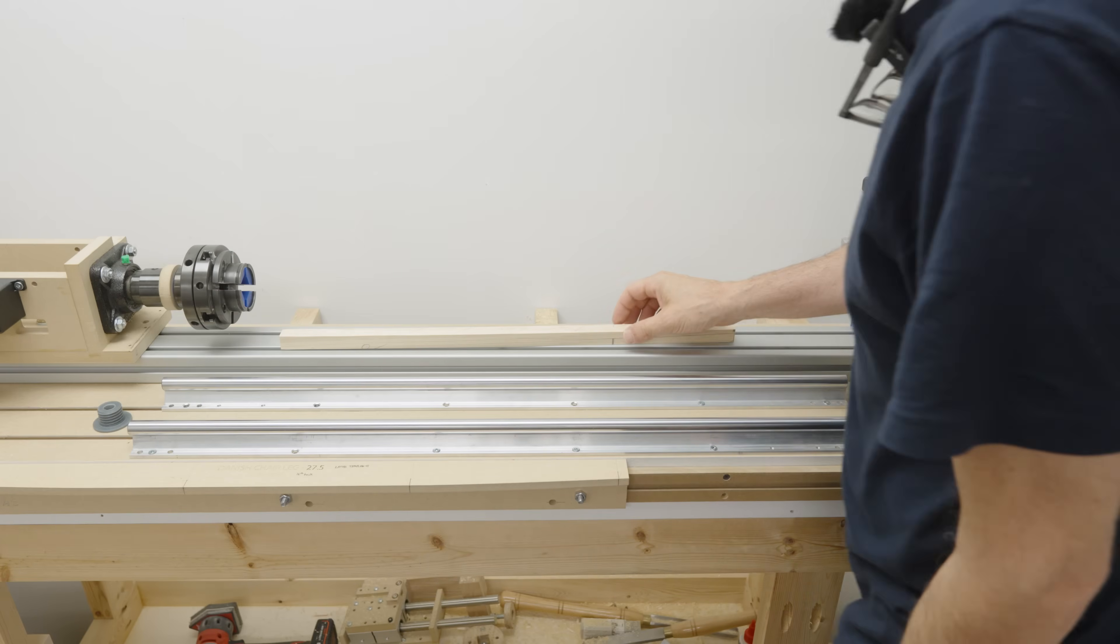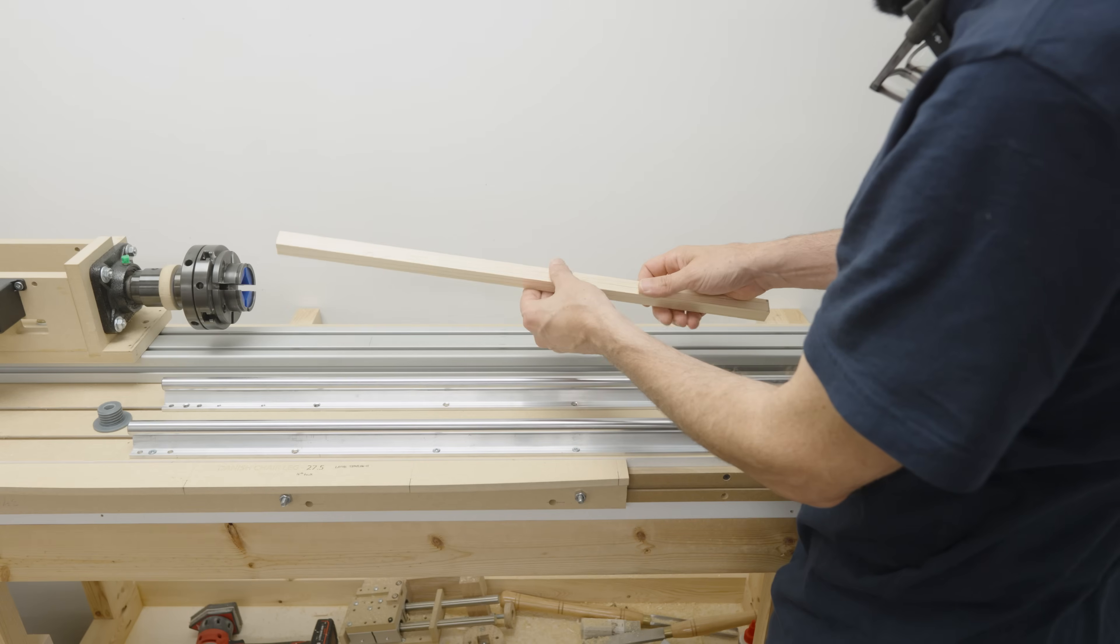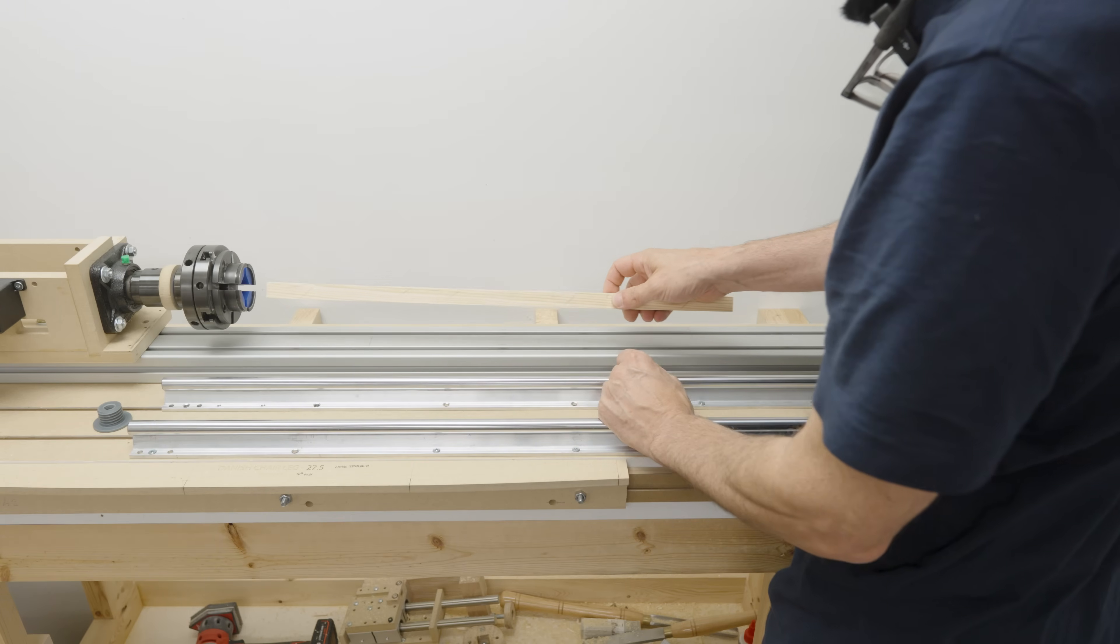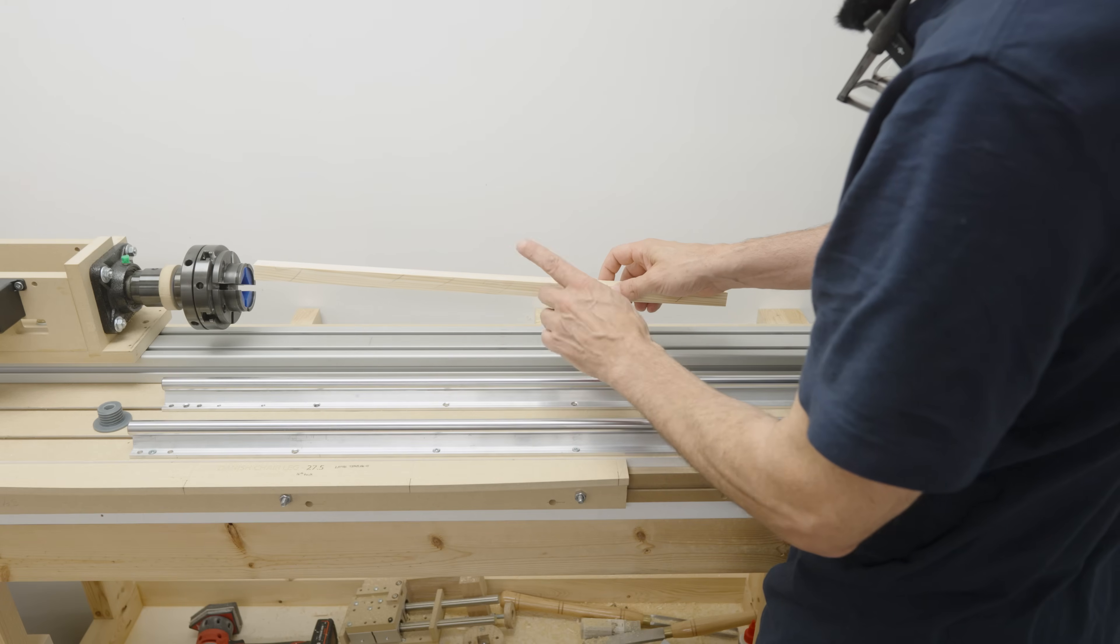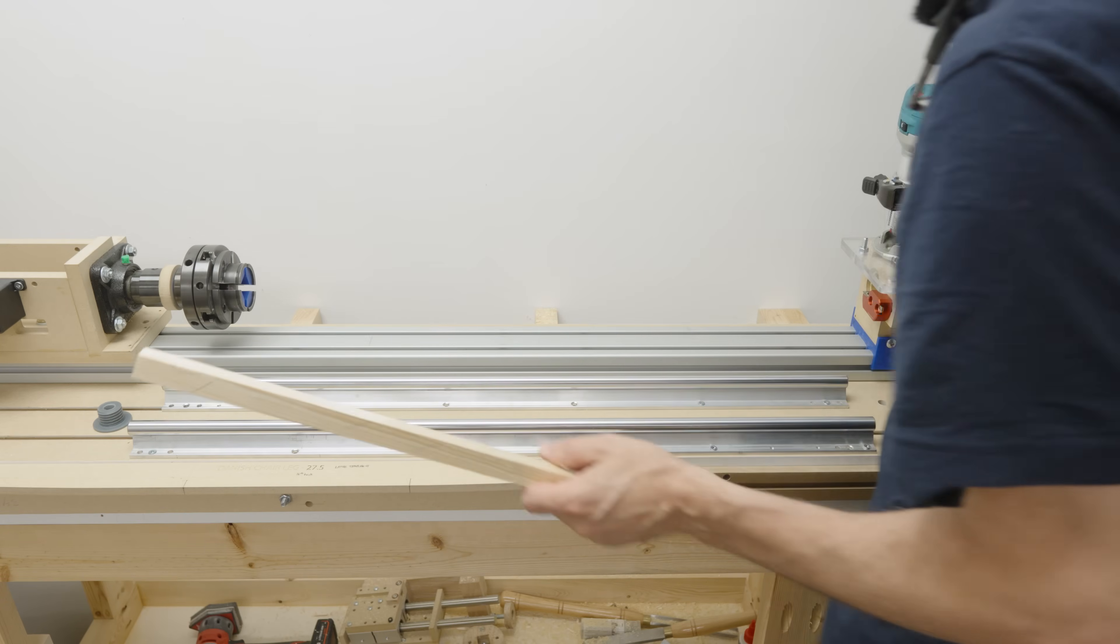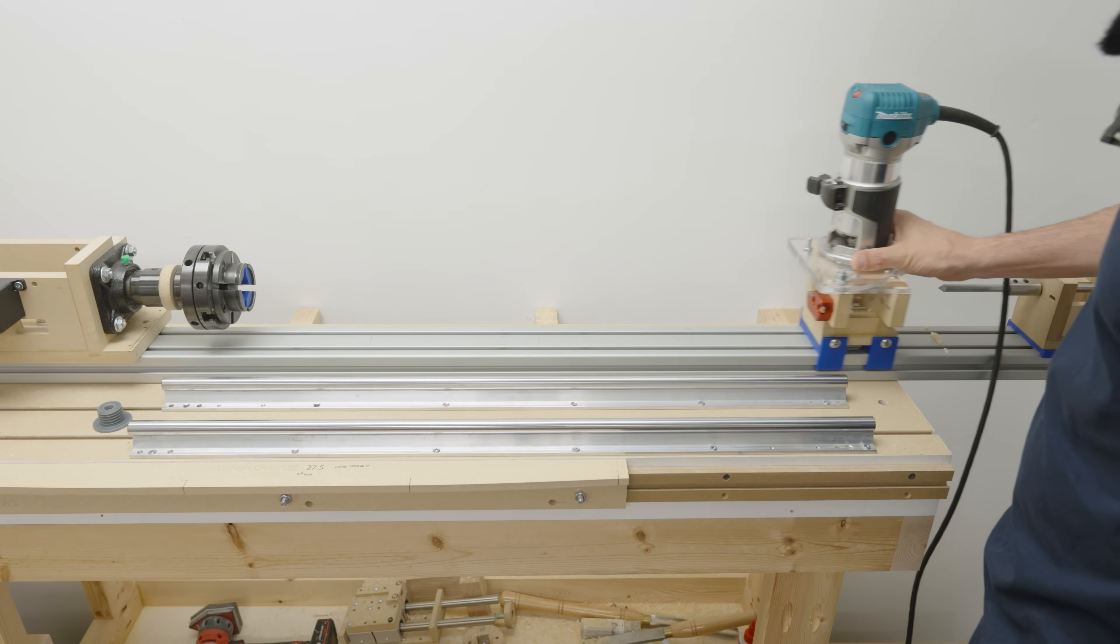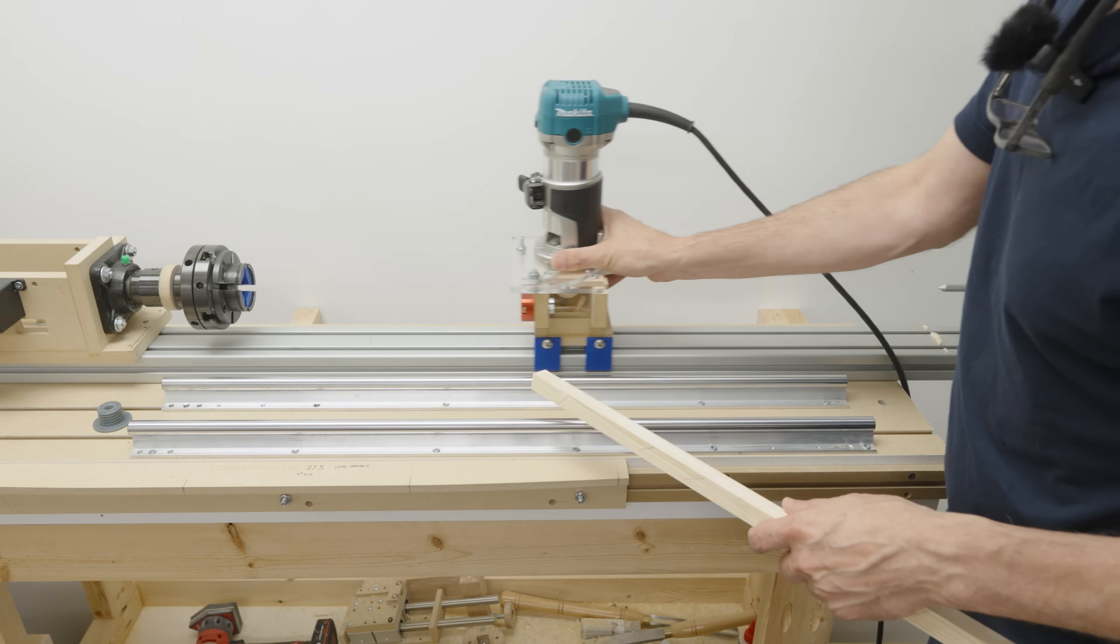So this is the basic theory of what I'm going to do. I've got 3 quarter inch square stock and I'm going to turn it down to a 5 eighth inch dowel. I'm going to use this unit right here, slide it along, and this will cut the dowel.